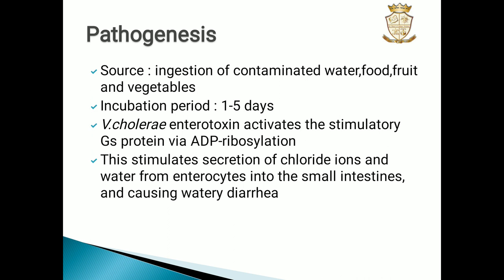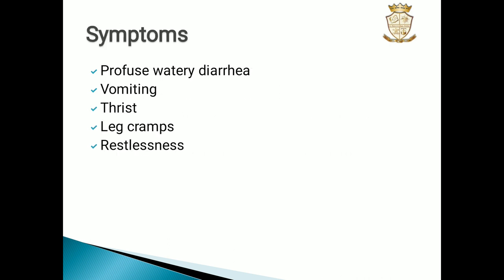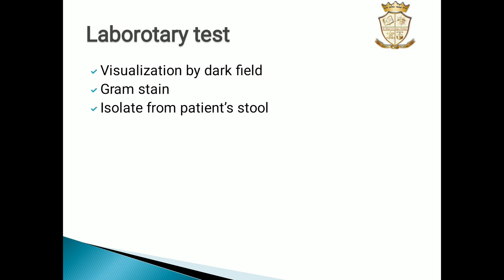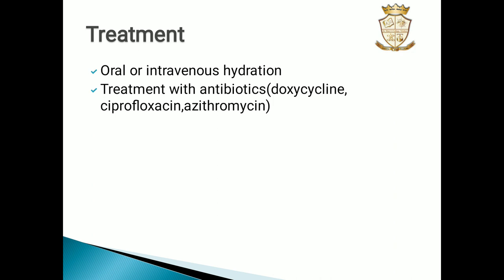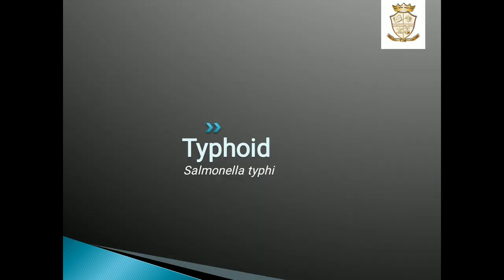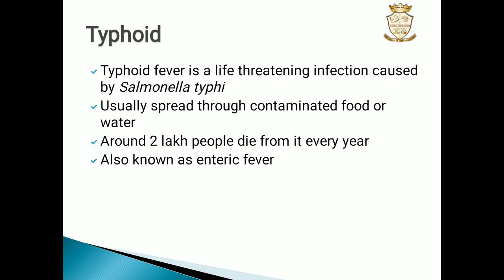The main symptom of cholera is profuse watery diarrhea, along with vomiting, thirst, cramps, and restlessness. Laboratory diagnosis can be done by visualization using dark-field or gram staining, and the bacterium can be isolated from the patient's stool. Treatment includes intravenous or oral hydration, followed by antibiotics like doxycycline, ciprofloxacin, and azithromycin.